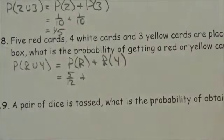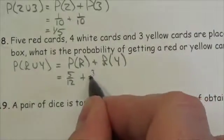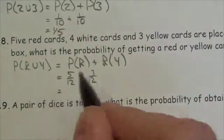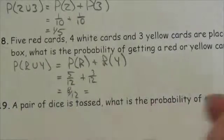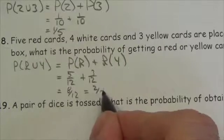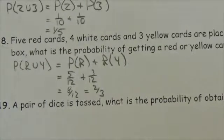Or I could have gotten a yellow card and there are three out of twelve cards that are yellow, so altogether that's eight out of twelve. Divide those both by four here to get two thirds. So the probability of getting a red or a yellow card is two thirds.